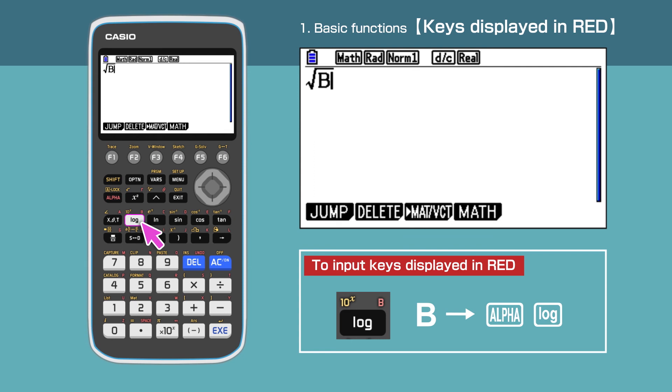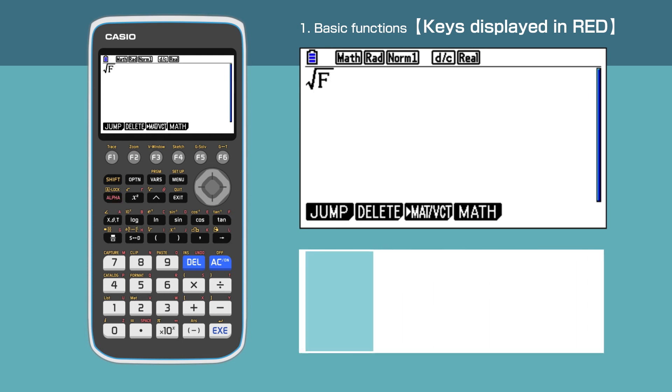Press the log after to get b. We have successfully entered b. Can you display f by yourself now? You need to enter alpha then tan to get f.